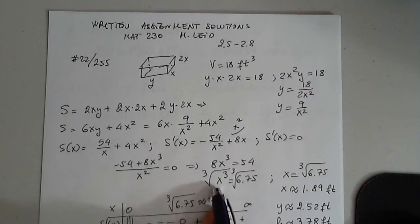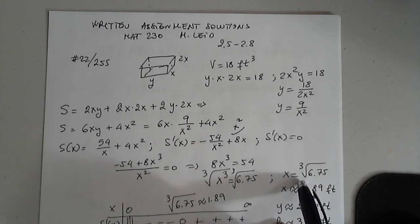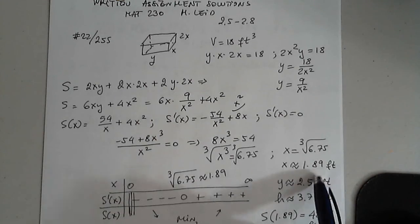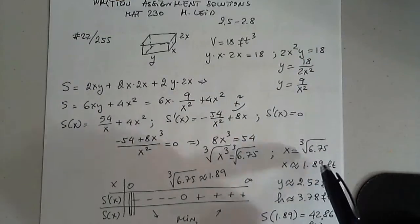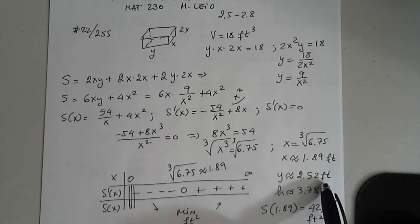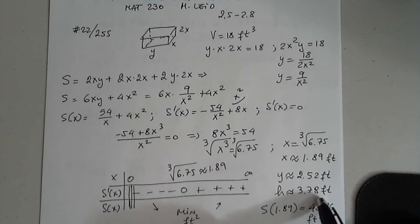We move 54 to the other side. We apply the cube root, so we get 54 over 8, 6.75, and x is the cube root of 6.75, which is approximately 1.89. Going back and dividing 9 by 1.89 squared, we get y to be 2.52, and the height is twice x, so twice times x is 3.78 feet.